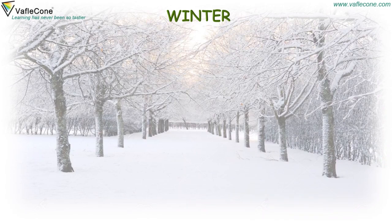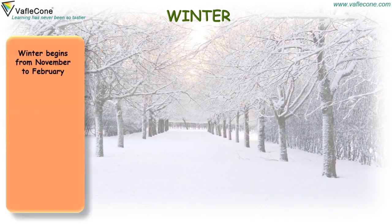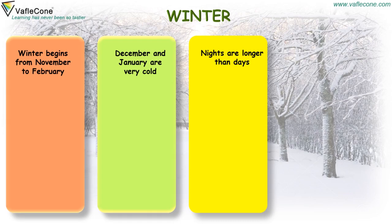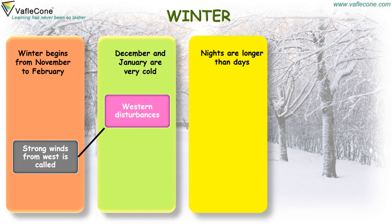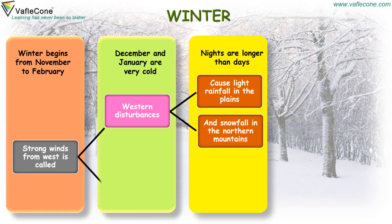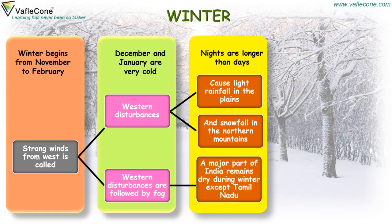Winter. Winter begins from November to February. December and January are very cold. Nights are longer than days. Strong winds from the west, called western disturbances, cause light rainfall in the plains and snowfall in the northern mountains. Western disturbances are followed by fog. A major part of India remains dry during winter except Tamil Nadu.